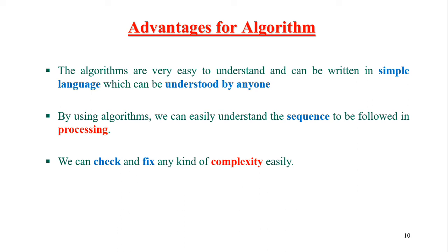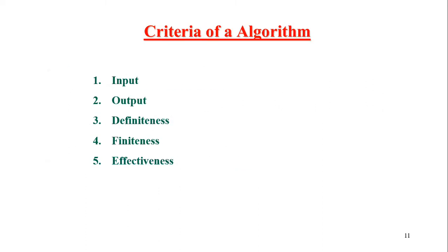Our system is very easy. We will talk about the algorithm step-by-step procedure for complexity checking or fixing the problem, which is very easy. In the algorithm, there are five criteria. Number one is input, output, definiteness, finiteness, and effectiveness.